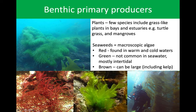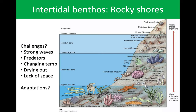If you go to Laguna, they have some pretty good kelp forests down there. Thinking about the intertidal benthos — the area that falls between high tide and low tide — it's a very dynamic area. One part of the day everything is submerged. Throughout the day that water recedes and a lot of these organisms are exposed to predation and open air. Some of the challenges these guys face are strong waves, predators — you see a lot of birds cruising the shoreline looking for prey as the tides change — changing temperatures, drying out, and lack of space. It gets pretty crowded as you're chasing the water line.